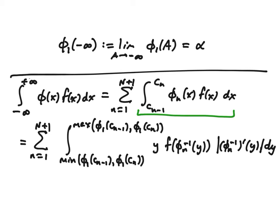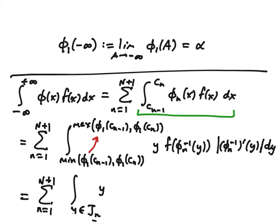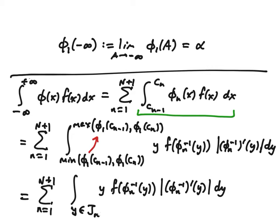To make further progress, we need to realize that these intervals of integration are nothing but the ranges of the nth pieces. So we're letting y run through j_n, which is the range of the nth piece, in the increasing direction. Writing it that way is more elegant, and it's correct because the minimum and maximum are exactly the two endpoints of that range.